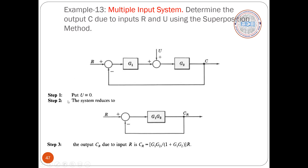To start with, I'll mask the other input — I'll mask input U. So I'm considering input R and blocking input U. If I'm blocking input U, the summer has no significance; the other input is not there, so we can remove the summer. You get G1 and G2 with R in cascade — you can group them. This is the reduced block diagram for the condition U equals zero. Now it is very simple to calculate the output for input R.